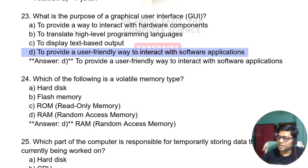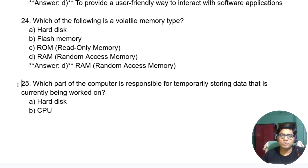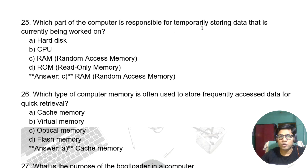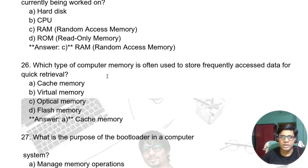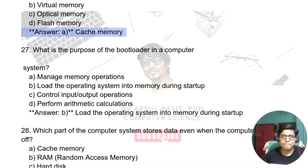Which of the following is a volatile memory? Which part of the computer is responsible for temporarily storing data that is currently being worked on? RAM is the temporary storage currently being worked on. Which type of computer memory is often used to store frequently accessed data for quick retrieval? That is cache memory.